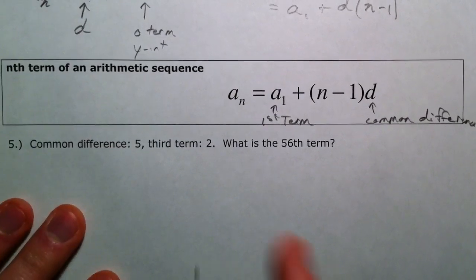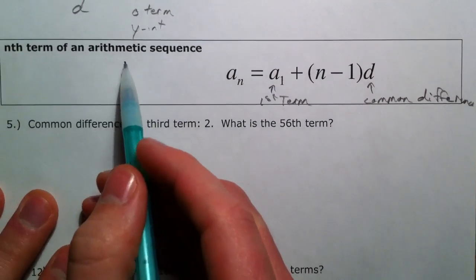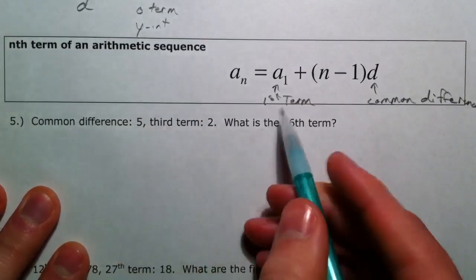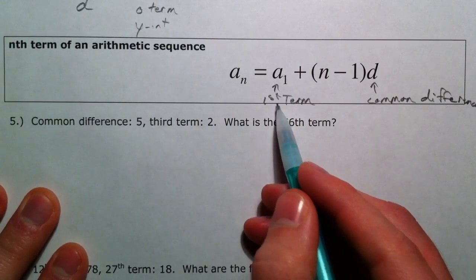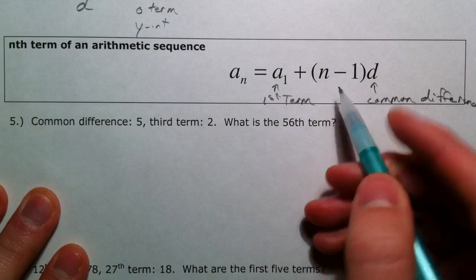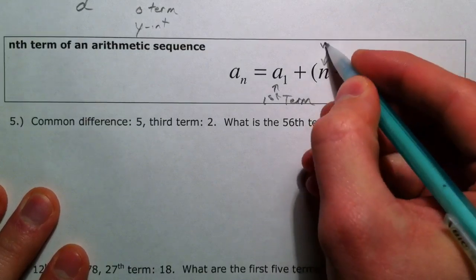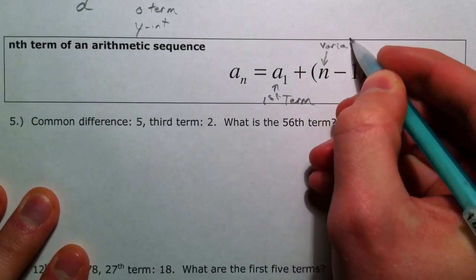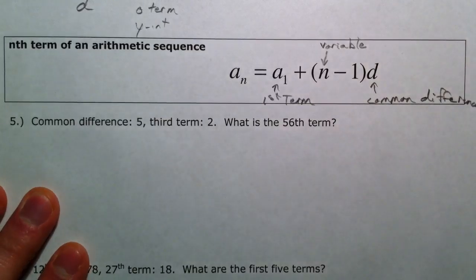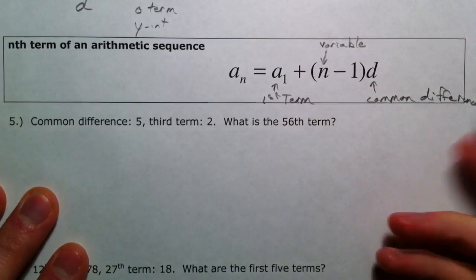Alright, so we just got done talking about the nth term of an arithmetic sequence. You can generate it no matter what if you have the first term, and n—this is going to be the variable usually—think of that as your x. And then d is the common difference.